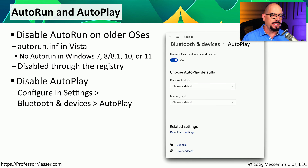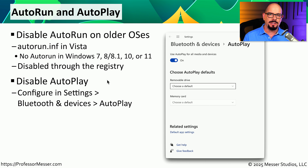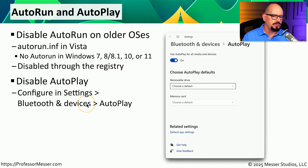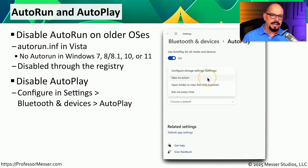A feature that still exists in Windows is Autoplay, found in the Settings app under Bluetooth and Devices. Unlike Autorun, which focused on running executables, Autoplay focuses on running media such as movies, music, or images — a much lower security risk, but still something you may want to enable or disable. Under the Autoplay options, you can choose to take no action when media is connected, open the folder in File Explorer, or have the system ask you every time.